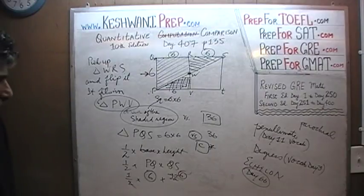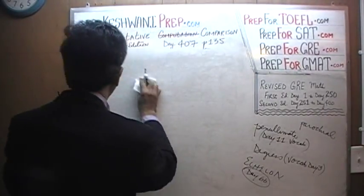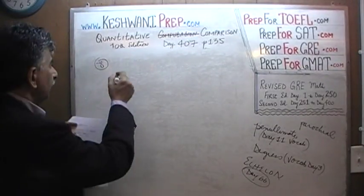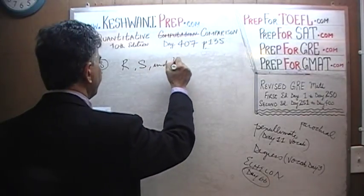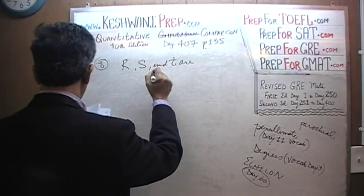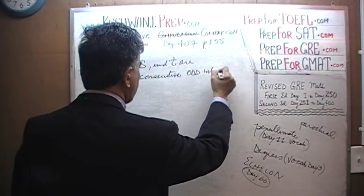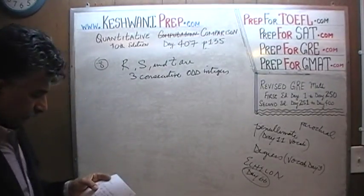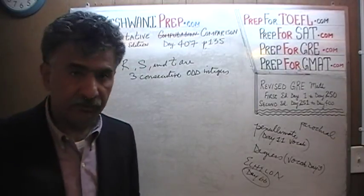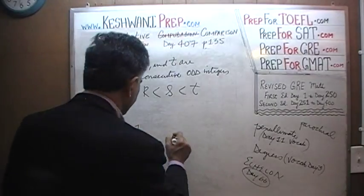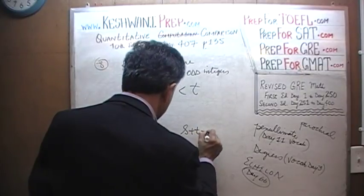Question number 8. We are told that R, S and T are three consecutive odd integers and they go on to tell us the order. They go on to tell us that R is less than S and S is less than T. And the question is which quantity is bigger? R plus S plus 1 versus S plus T minus 1. Let's find out, shall we?